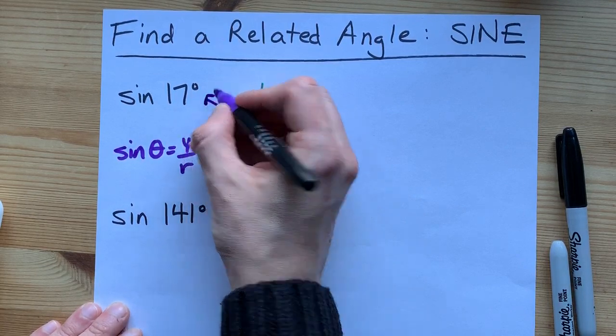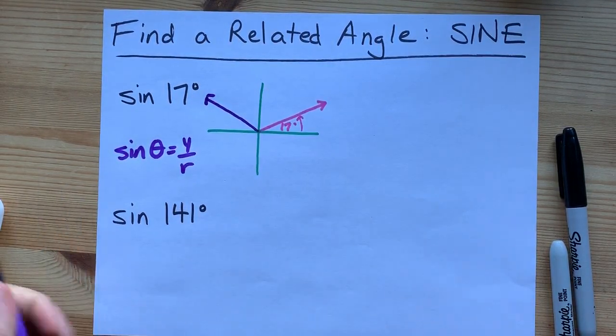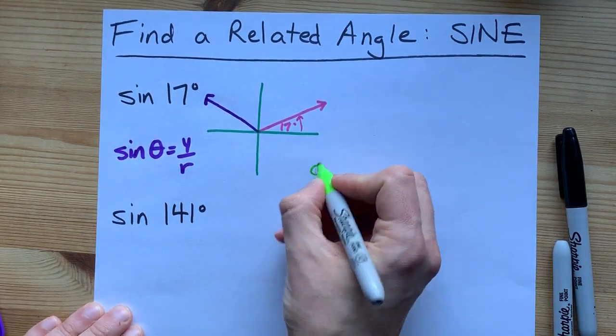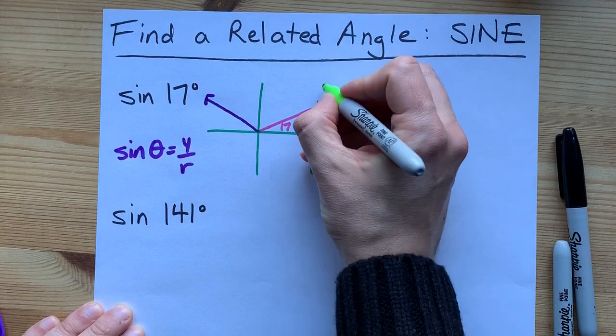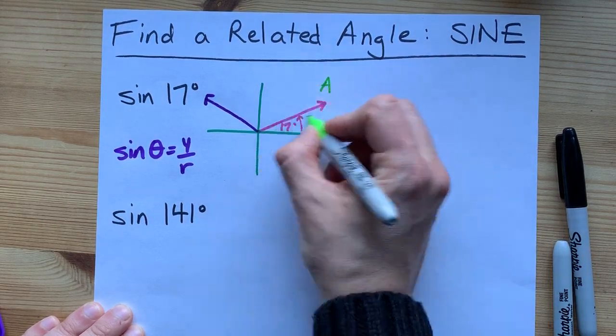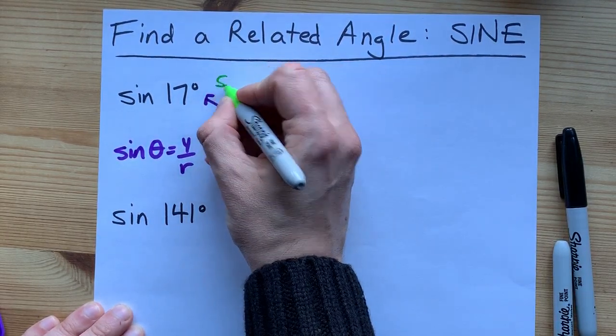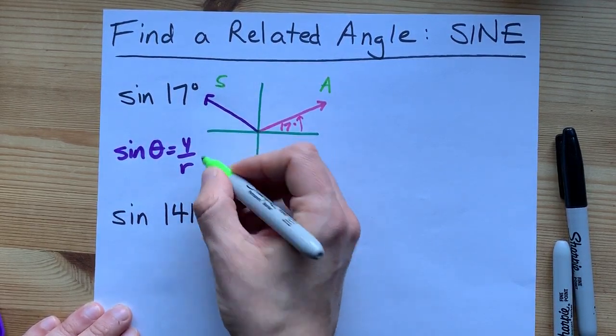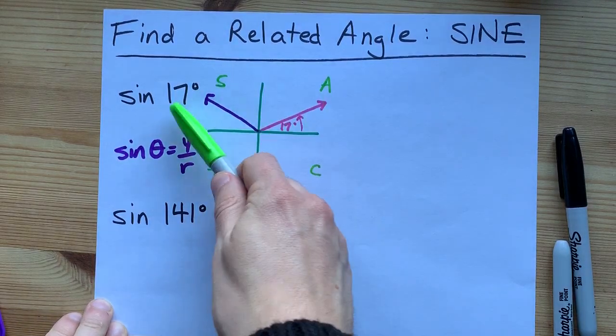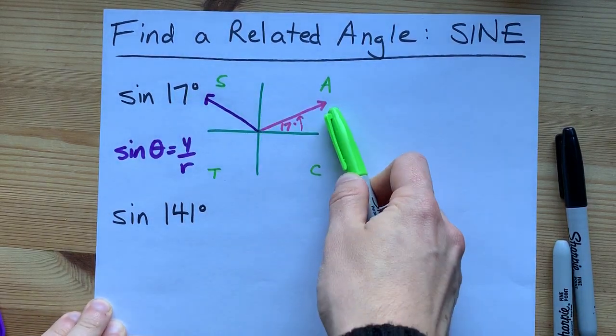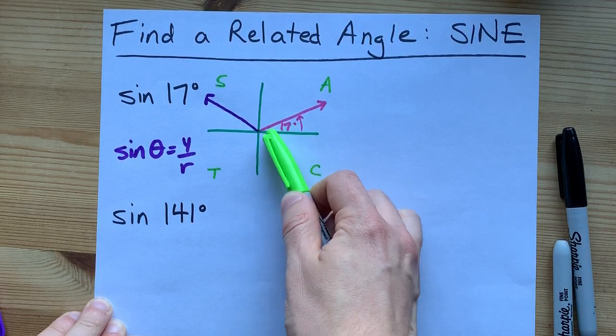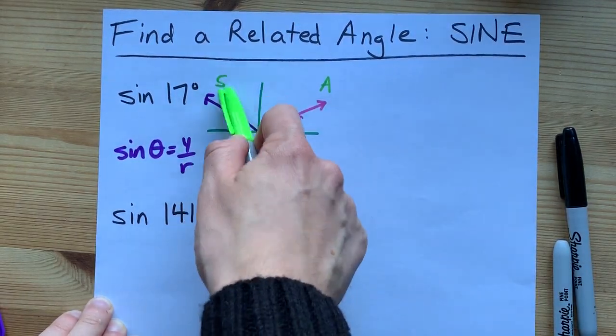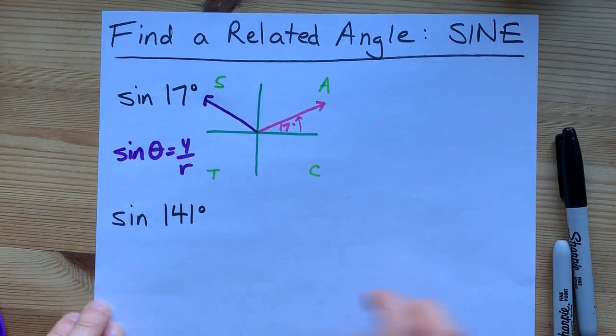My other thing is that some teachers will teach you what's called the CAST rule. The CAST rule says that cosine is positive down in this corner, all of them are positive in this corner, sine is positive in this corner, and tan is positive in this corner. So if sine of 17 degrees is here where they are all positive, it's also positive here in the S quadrant where only sine is positive.